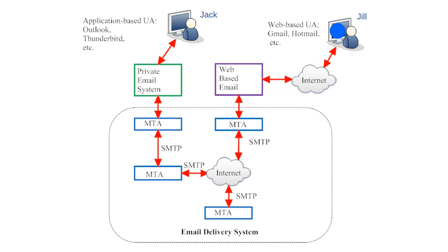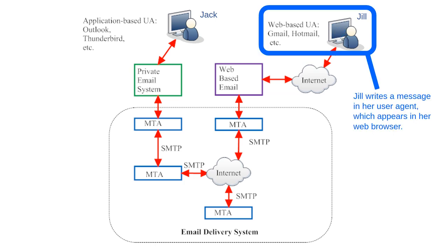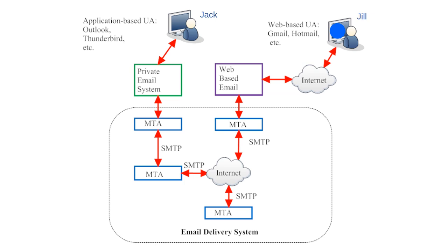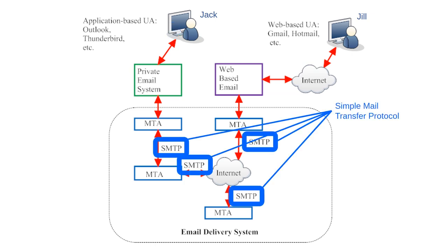If Jill wanted to send a message back to Jack, the whole process would be reversed. Jill would write a message in her user agent, which appears in her web browser. When she hits send, the email would travel through the internet to her web-based email client, which would forward it to a message transfer agent. The message would travel across the internet through various MTAs, and the final MTA would keep the email in storage until Jack's user agent requested access to new incoming emails. In this illustration, the connections between MTAs are labeled SMTP — Simple Mail Transfer Protocol — which is the communications protocol that MTAs use to communicate with each other. You might think of SMTP as the language of email servers, kind of like how internet protocol is the language of the internet.